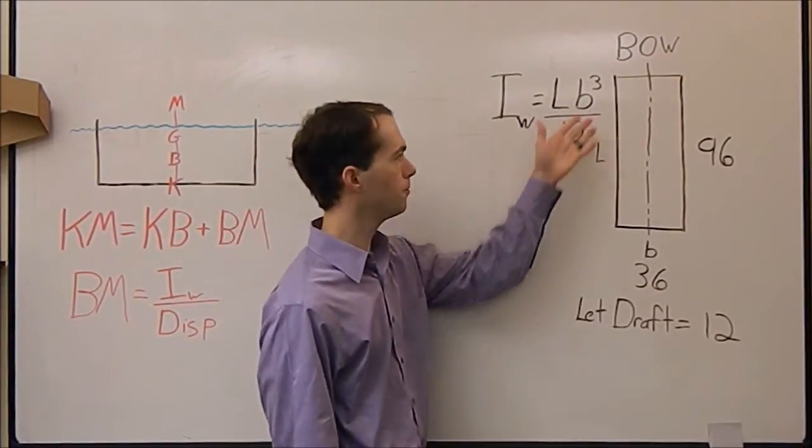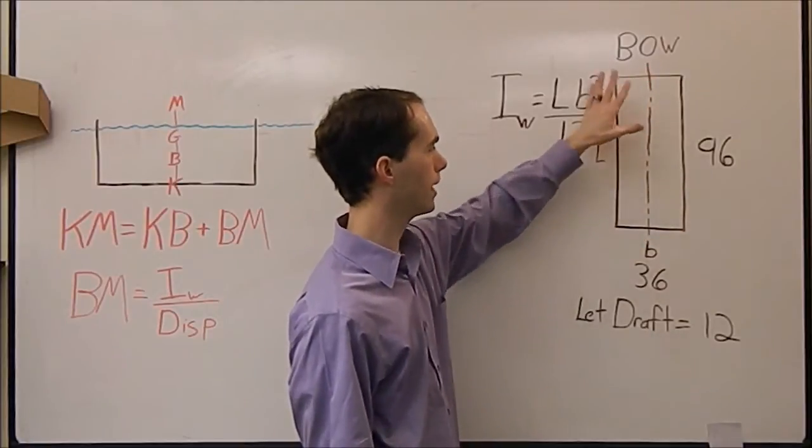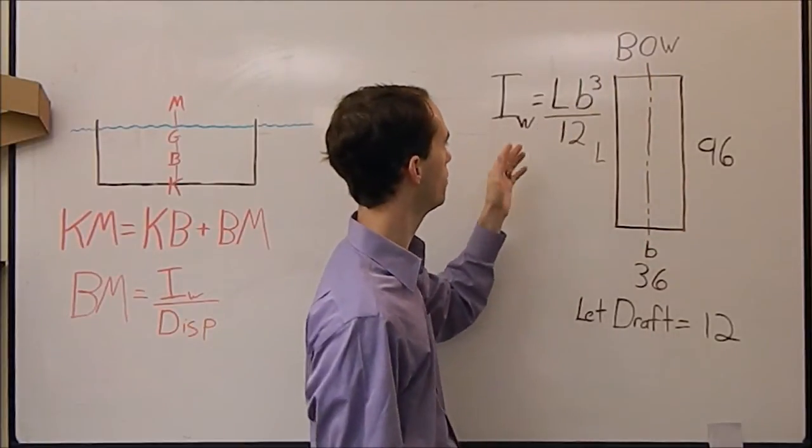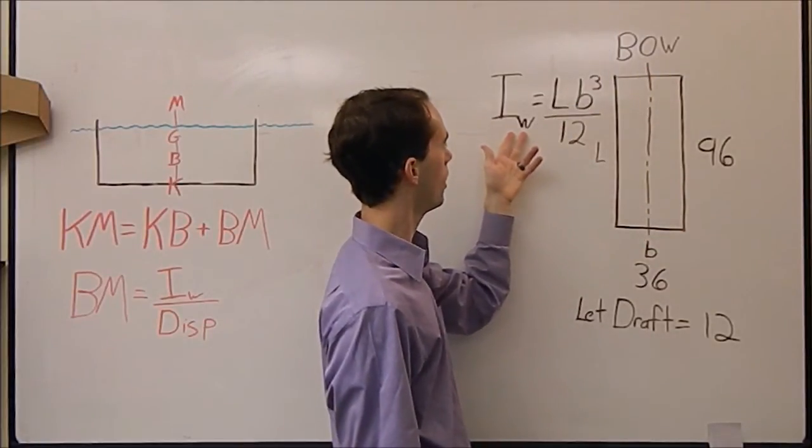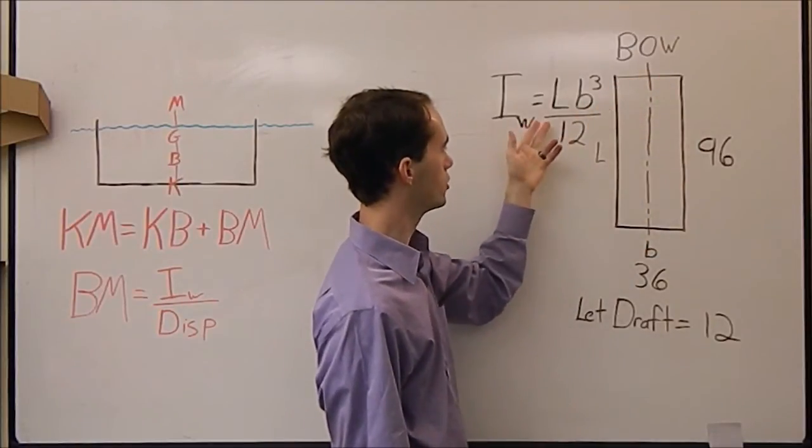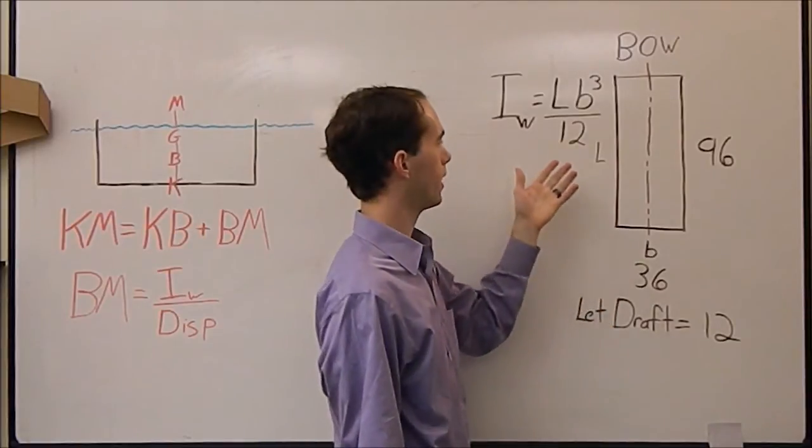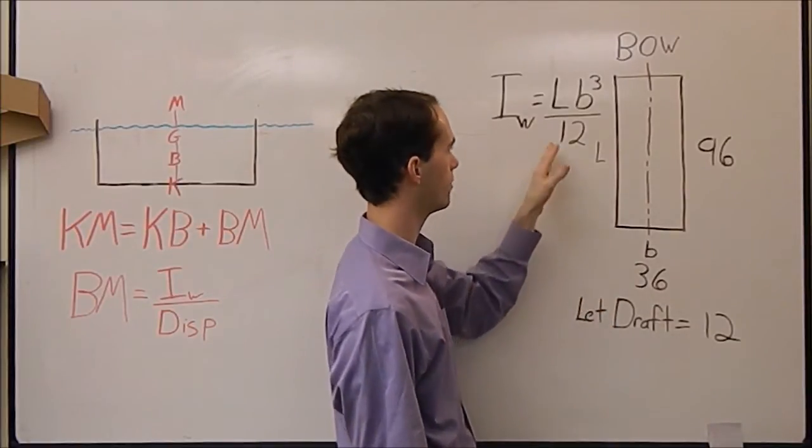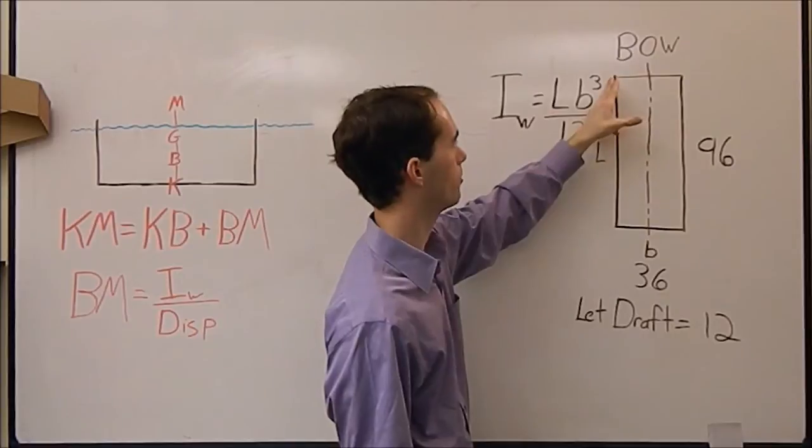For my example here, I'll just keep it simple. We've got a rectangular boat. Looking at it from the top, the bow is up there. The inertia of the water plane area, which is taken to be this rectangle, is your standard formula, 1/12th BH cubed. Well, in this case, I've substituted the B's and the H's out and switched the names around a little bit to make more sense. We have length and the base, which is 96 and 36.